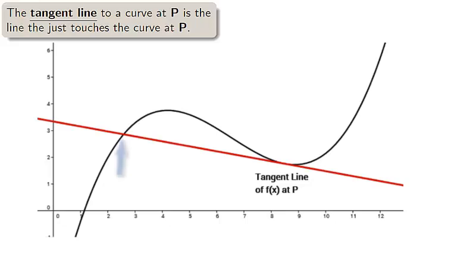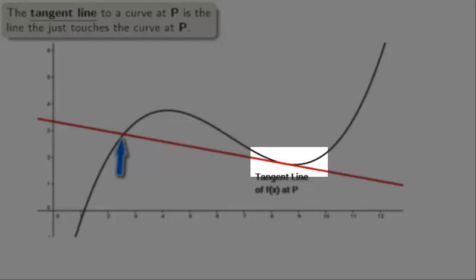Tangents are a local property. That is, the tangent can cross the curve away from P, but near P, the tangent is touching no other point.